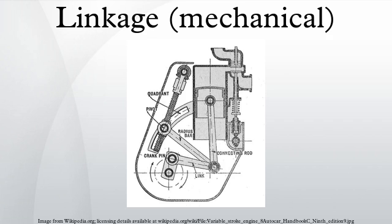A linkage modeled as a network of rigid links and ideal joints is called a kinematic chain. Linkages may be constructed from open chains, closed chains, or a combination of open and closed chains.